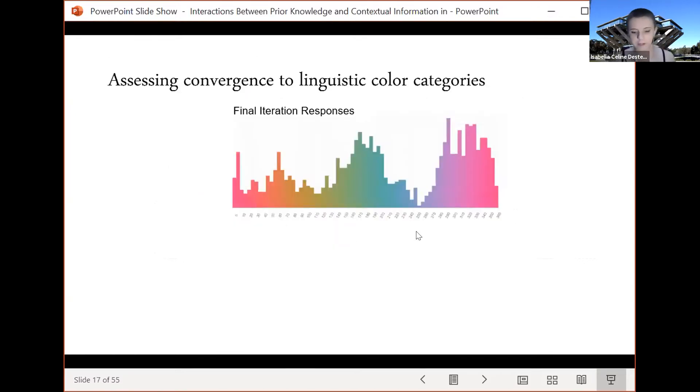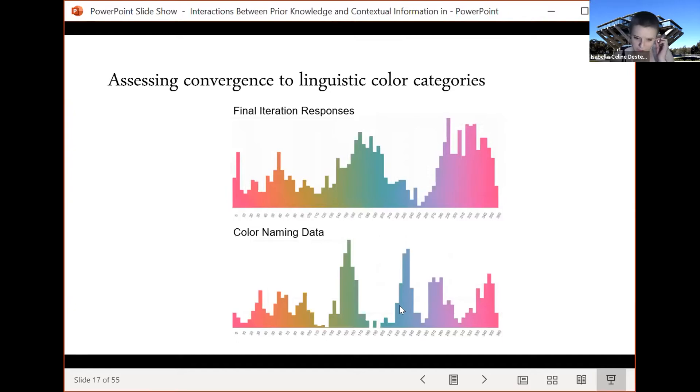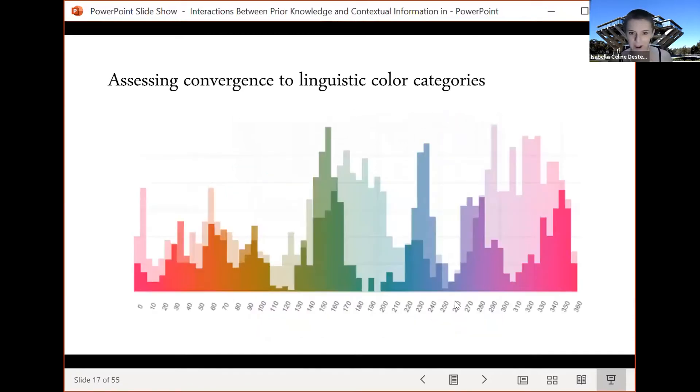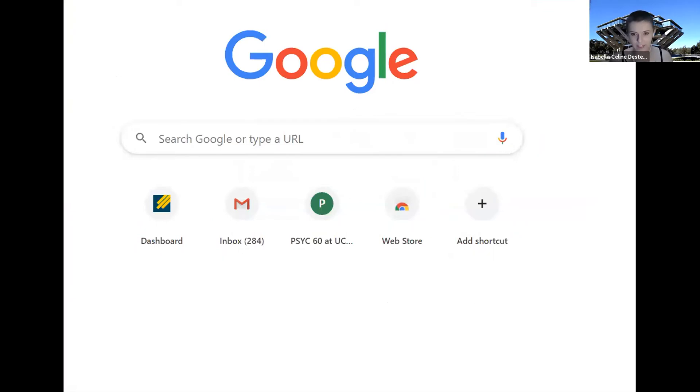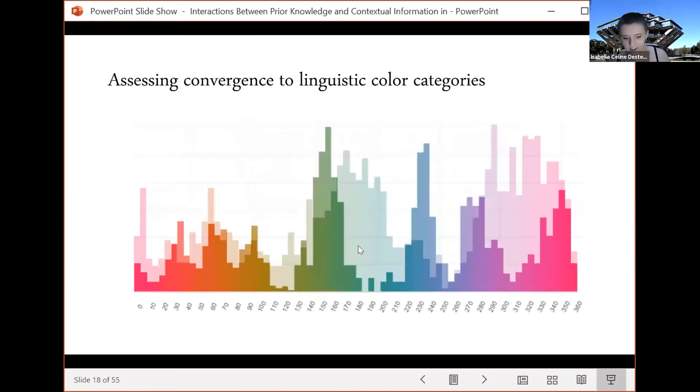And this non-uniformity is exaggerated by the iterated chains so this is the distribution of final iteration responses and you can see that this non-uniformity is similar to what we see in the overall data. We wanted to compare this to color categories so we collected color naming data using basic color terms and that's the distribution over color space that we obtained on the bottom. As you can see it's pretty inconsistent when we superimpose them, the inconsistencies are a little bit more apparent. This is not what we expected to find at all, we expected it to be consistent but as you can see for the blue and green and the purple and pink regions there are not distinct regions separated in memory as they are in the color naming data.